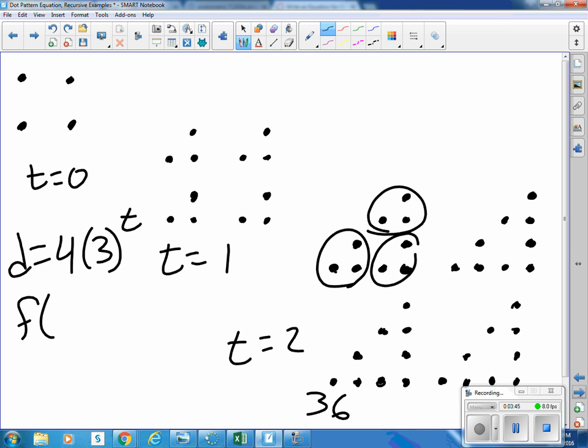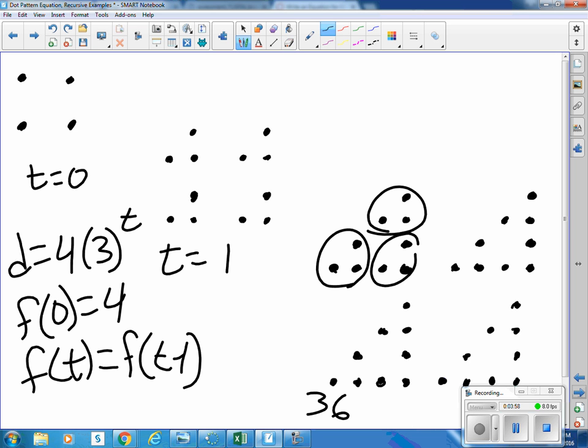We could say f of zero equals four, and f of t equals f of t minus one. So that's a recursive way of writing it. This is an explicit way of writing it.